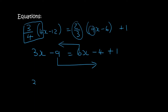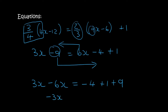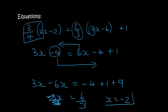On the left we already have 3x. When the 6x comes over it changes sign to minus 6x. Then minus 4 plus 1, and minus 9 becomes plus 9. So 3 minus 6 is minus 3x, minus 4 plus 1 is minus 3, and minus 3 plus 9 is 6. Divide both sides by minus 3 to get x by itself, so x equals minus 2.